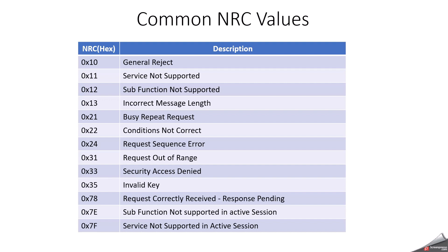NRC 13 means incorrect message length. This means the request format is wrong — for example, if a specific message length is expected but the request comes in with a different length, you will get 13 as the NRC.